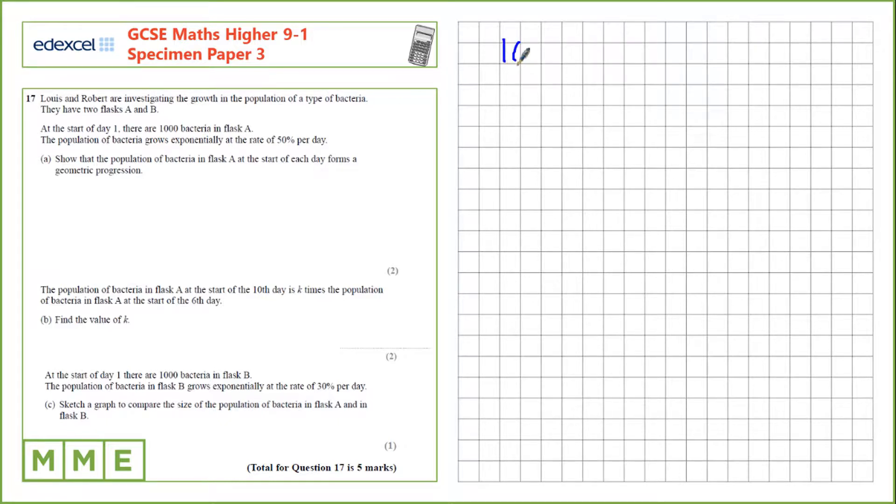So at the start of day one we have a thousand and then the next day it's going to increase by 50% which is a multiplier of 1.5. 1.5 times a thousand is 1,500. The next day we're multiplying by 1.5 again and 1,500 multiplied by 1.5 is 2,250. So this forms a geometric progression.